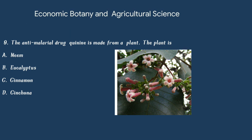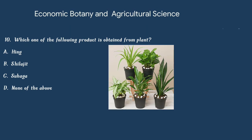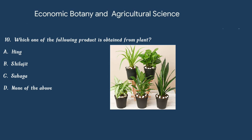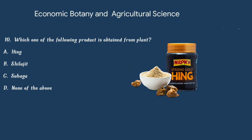Question number 10. Which one of the following products is obtained from a plant? Option A: Hing. Option B: Shilajit. Option C: Suhaga. Or option D: None of the above. The answer is option A: Hing.